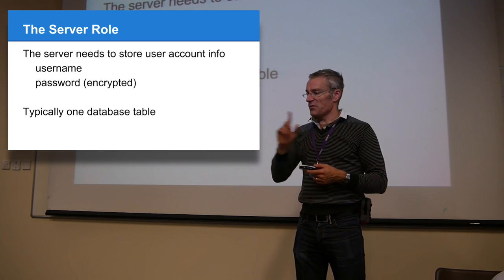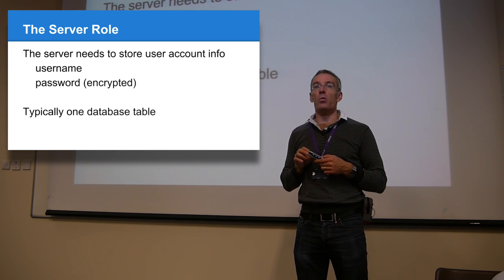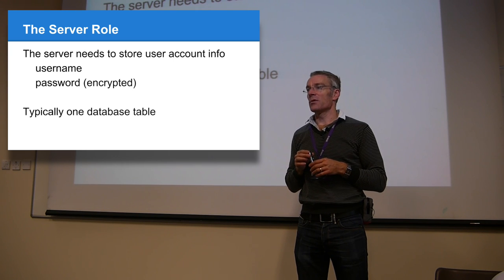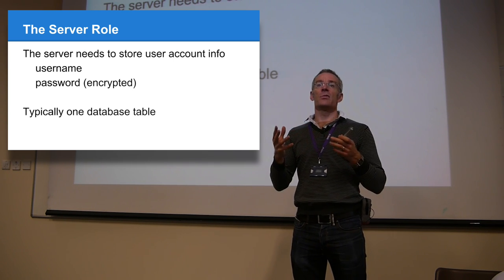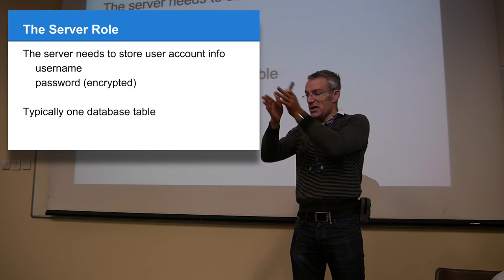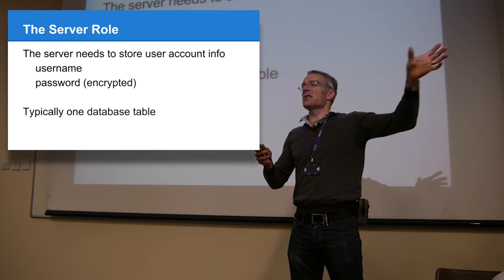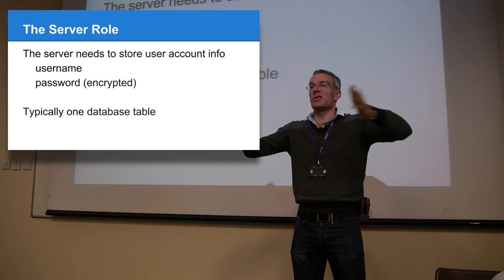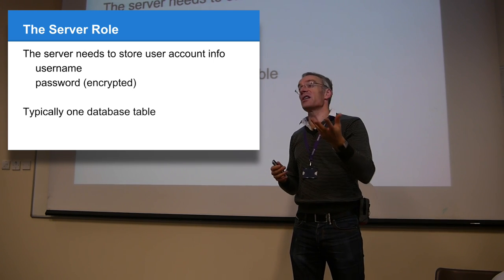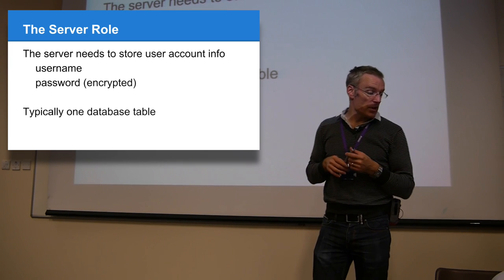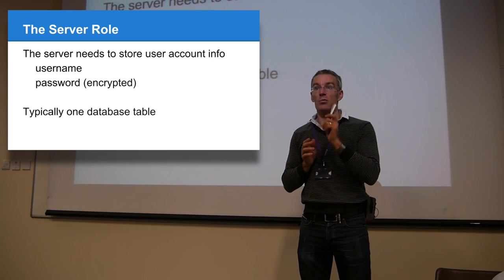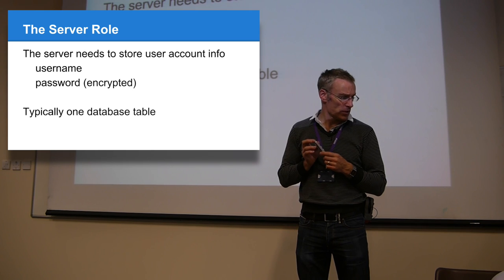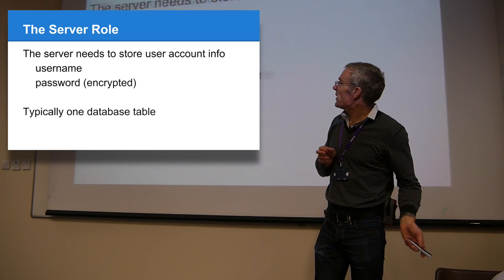To get authentication working on the server you need one additional database table to store usernames and passwords — possibly also names, email addresses, and contact details. The bare minimum is a username and a password. You can get the entire authentication system working with one table and just three fields: an ID, a username, and a password. It's a very simple mechanism.